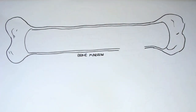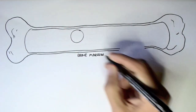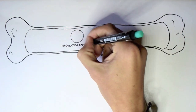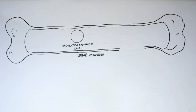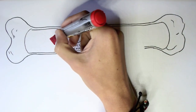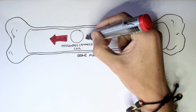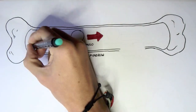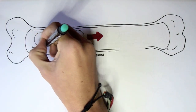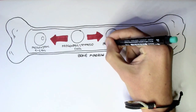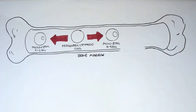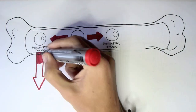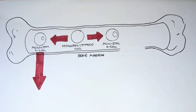We begin our journey in the bone marrow, which is within the bone. In the bone marrow, we have a progenitor lymphoid cell which comes from a stem cell. This progenitor lymphoid cell can become two things: it can become a progenitor T-cell, or it can become a progenitor B-cell. Let's follow the life of a progenitor T-cell first.